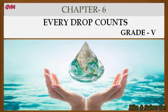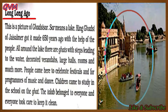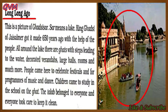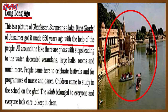This chapter also tells about various stories from old times that help students better understand the value and importance of water in one's life. The chapter starts with a story — long, long ago. You can see a picture here of Gharci Saar. Saar means a lake. King Gharci of Jaisalmer got it made 650 years ago with the help of the people.